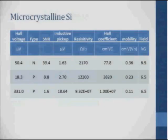Here are some measurements on microcrystalline silicon samples — three different samples. The Hall voltages ran from 50 microvolts, 18 microvolts, and as high as 300 microvolts. This 300 µV sample was N-type; the signal-to-noise ratio was almost 40, so the assignment is very good. The inductive pickup was about 1 microvolt. The resistivity was 2,100 ohms per square, the Hall coefficient was 77, the mobility works out to be 0.36, and this was measured in an RMS field of 6.5 kilogatuss.